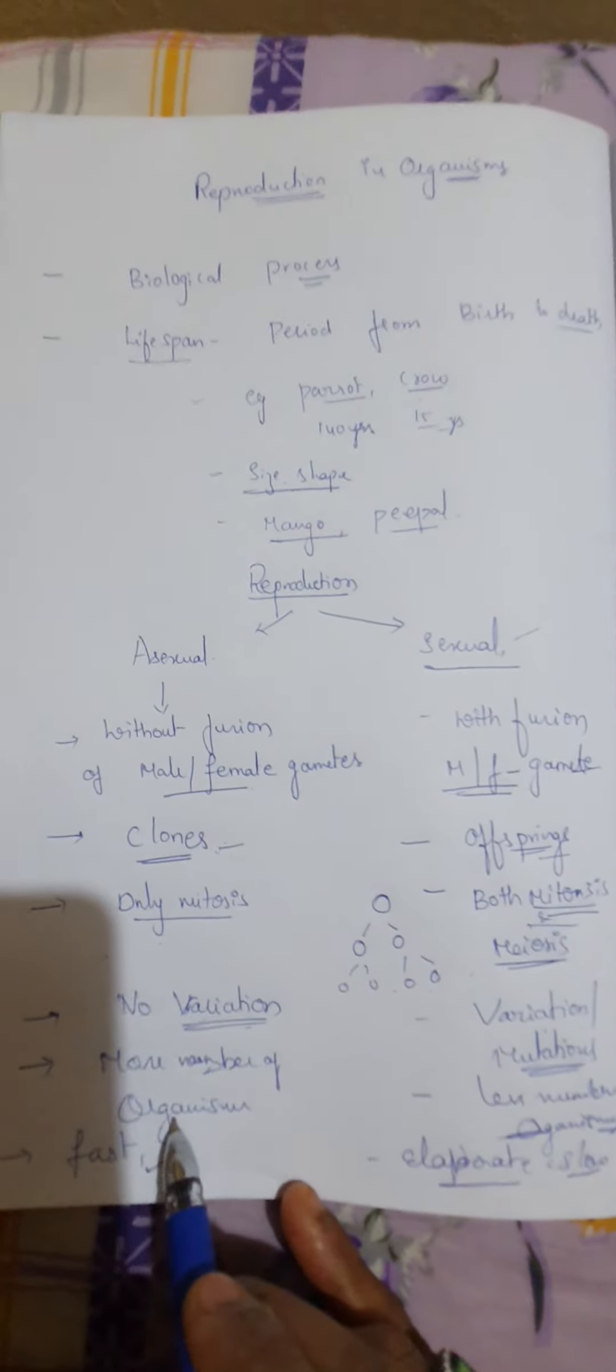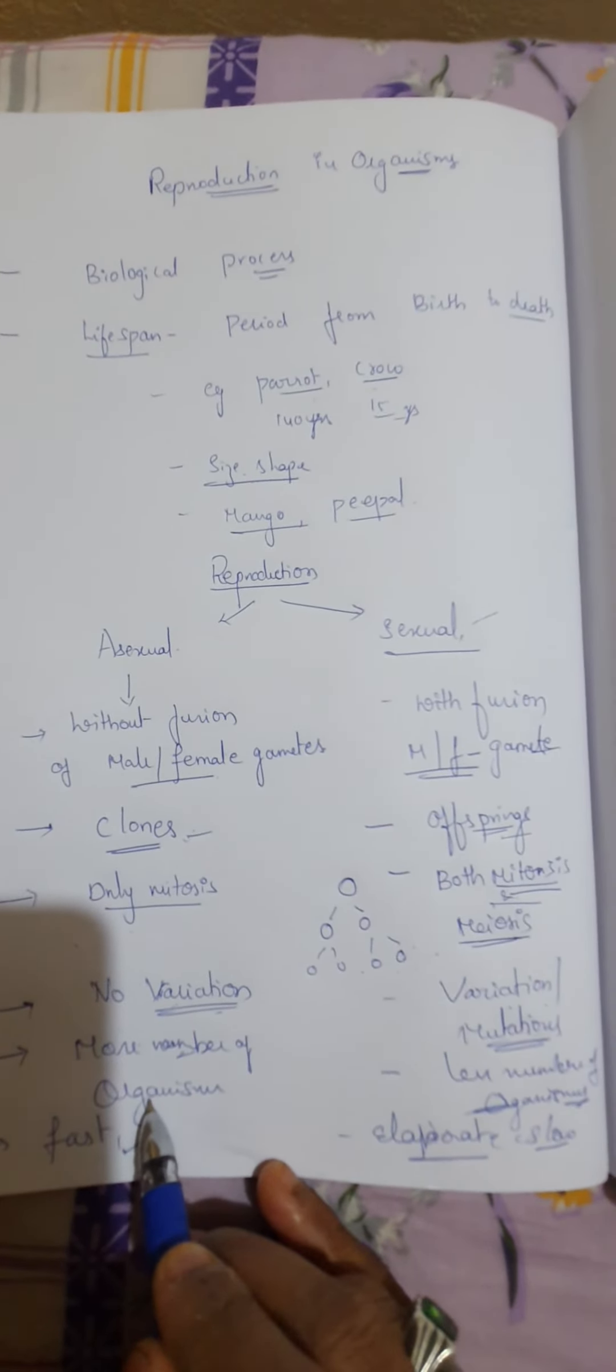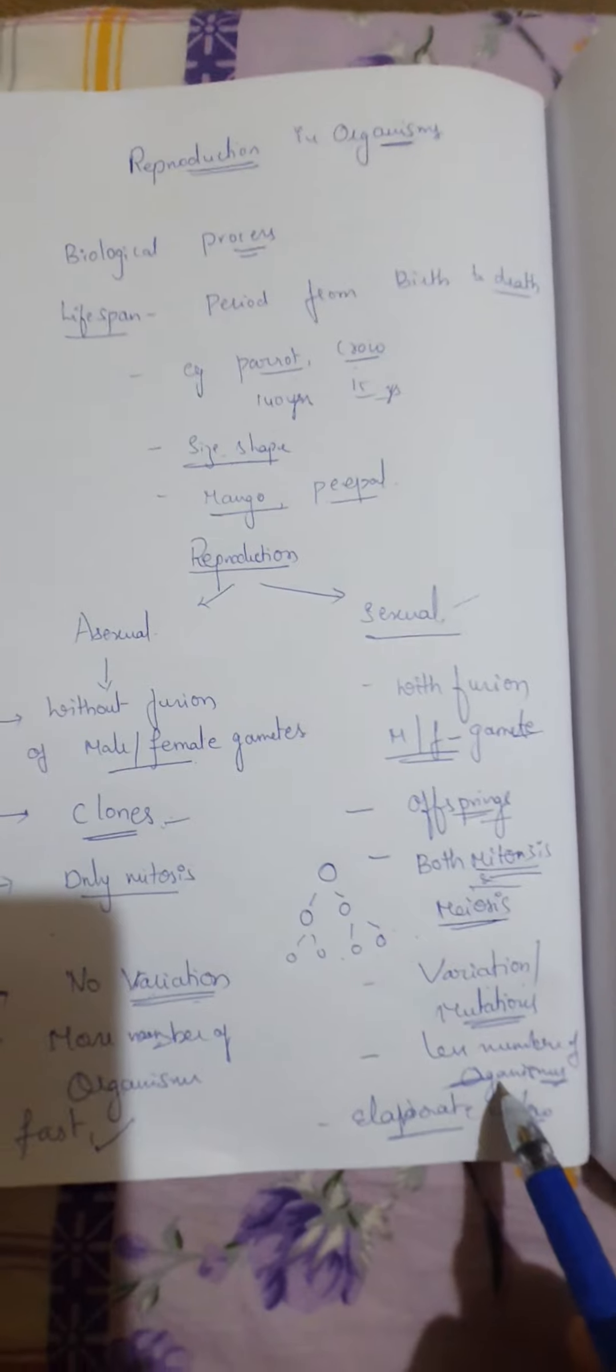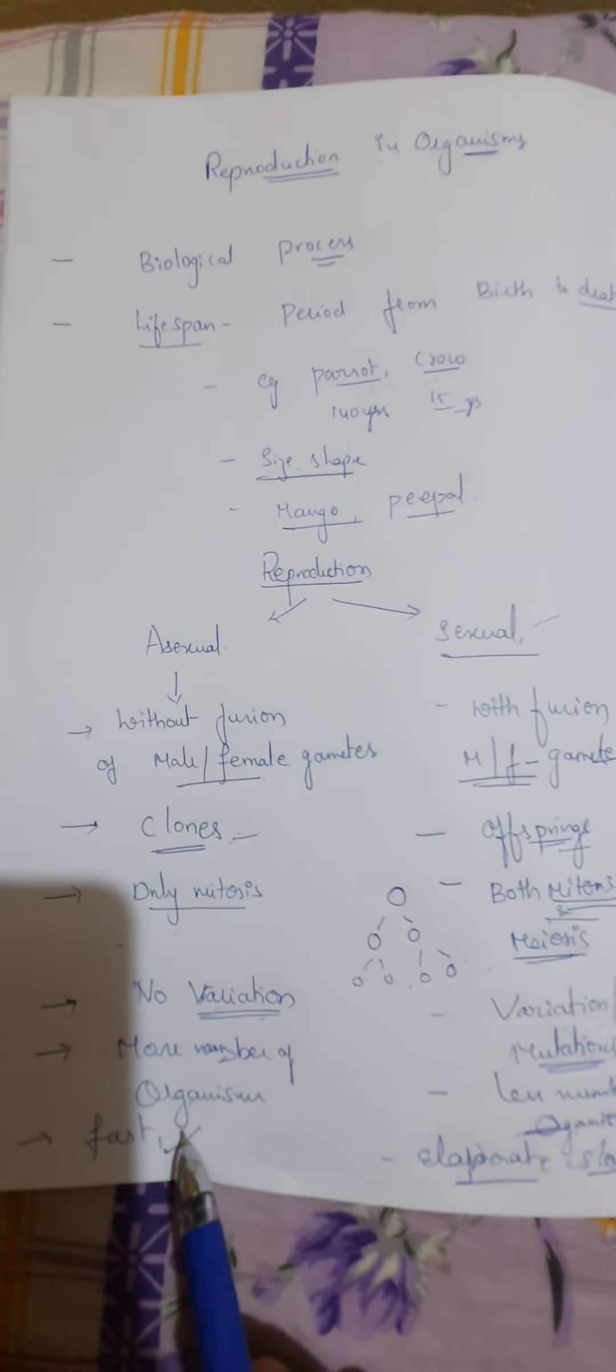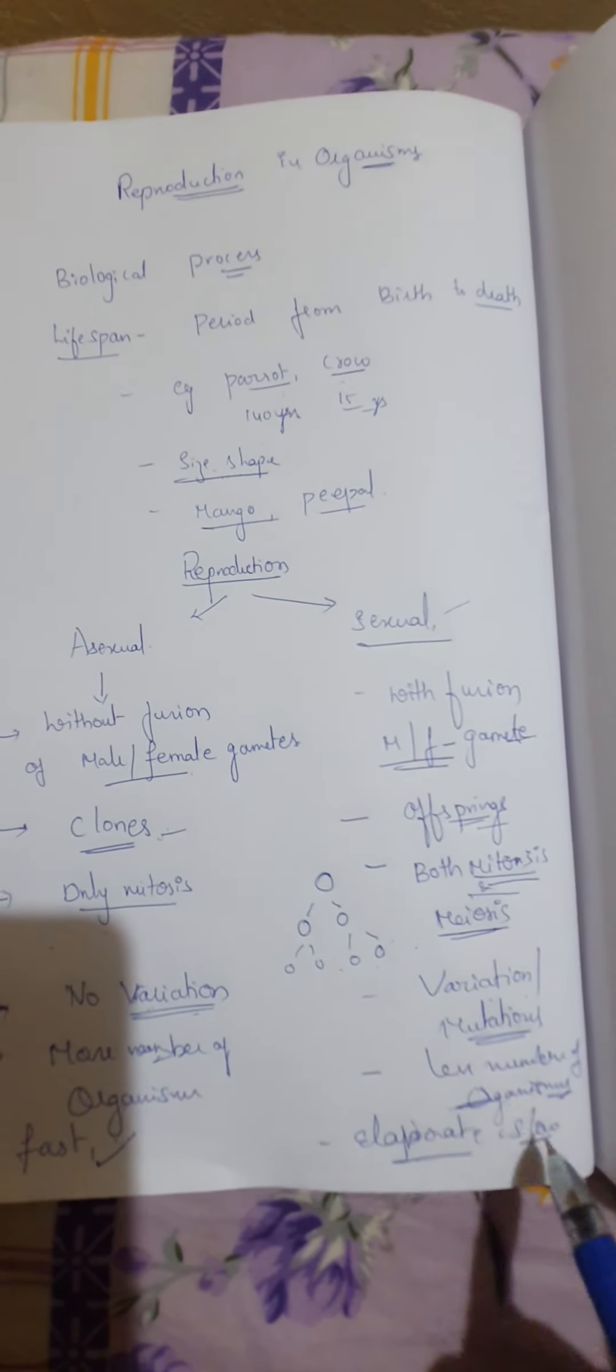And here more number of organisms are forming within a short period of time. And here less number of organisms are forming. And this process is fast and this process is elaborate and also slow process.